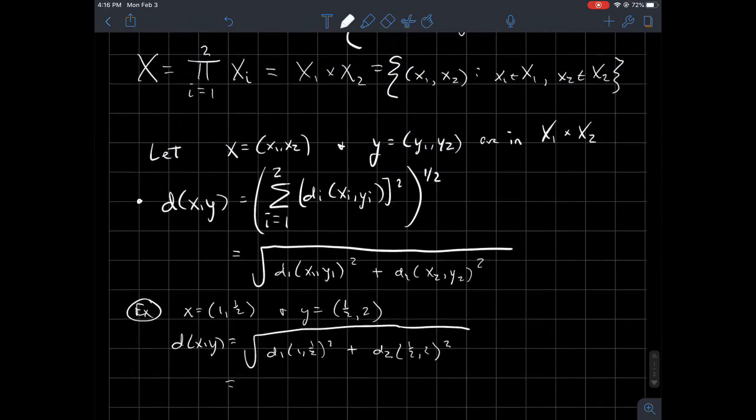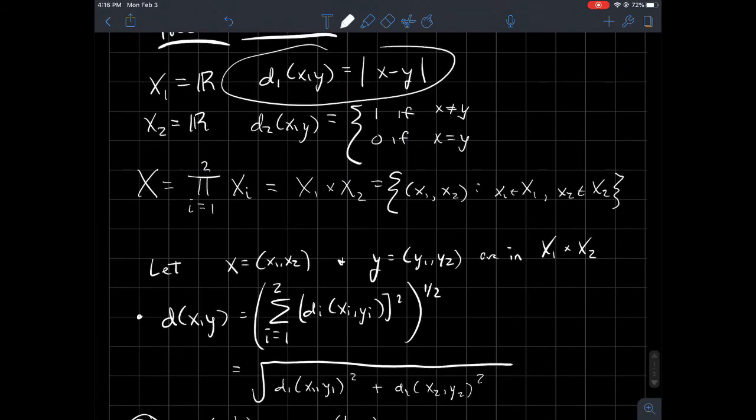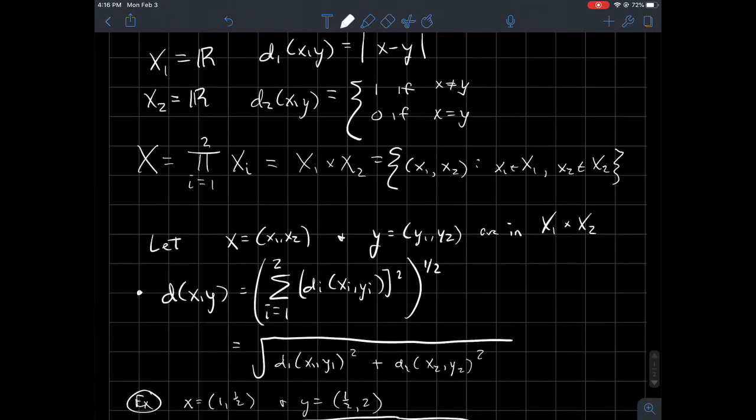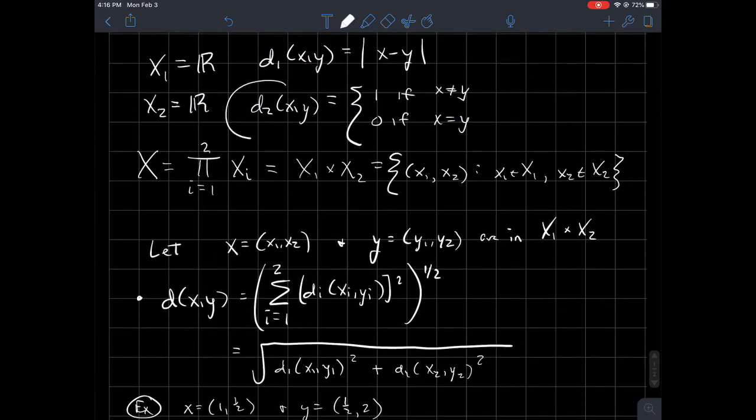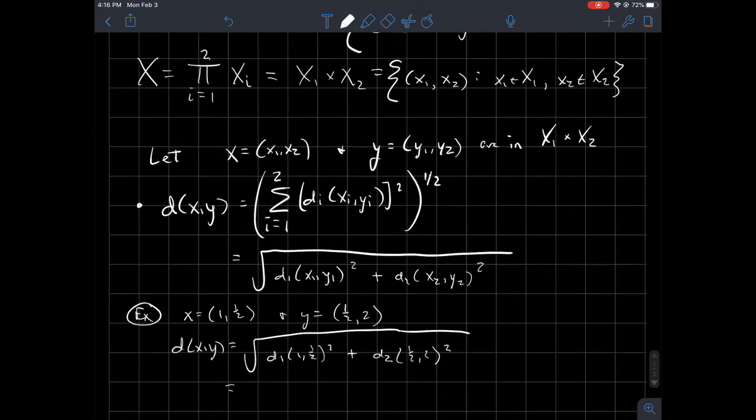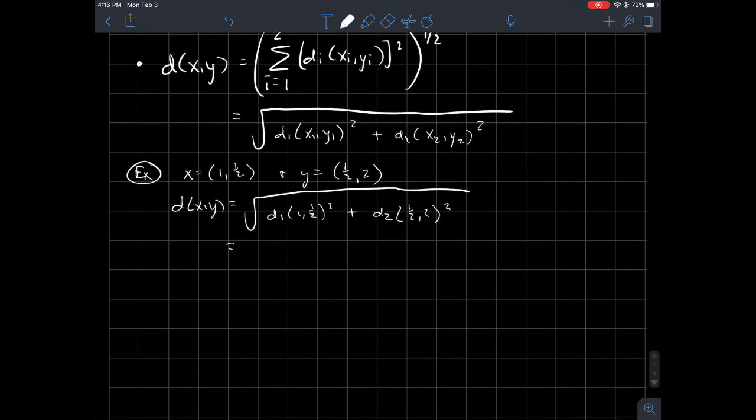And so what is that then? Remember in my example, D1, I told you that that was just the usual Euclidean metric. So in other words, absolute value of the difference of the two numbers. And while I'm up here, D2 is still going to be just the discrete metric. So just fix for this example. So in this case, this will just be one minus a half, that thing quantity squared, plus, in this case, since these two for D2, since they're not equal, that'll just be one squared. Since the inputs are not equal, remember the discrete metric just says they're one unit apart.